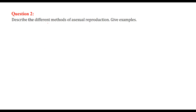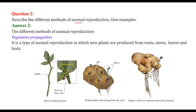Describe different methods of asexual reproduction with examples. Asexual reproduction means you don't require both male and female parts — either can do it individually. There are different methods.